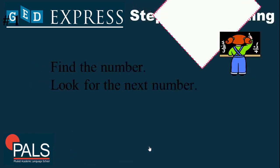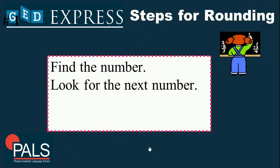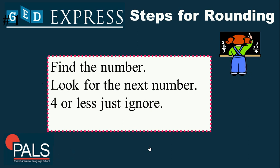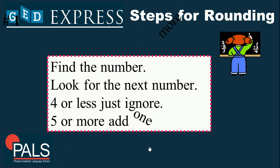For the lesson summary: we always follow our rounding rule. Find the number, then look at the next digit. If it's 4 or less, we ignore it and keep the number the same. If it's 5 or more, we add 1. That is the basic rule of rounding, specifically for decimals. And unlike with whole numbers, we do not turn the digits to the right into zeros — we simply remove them.